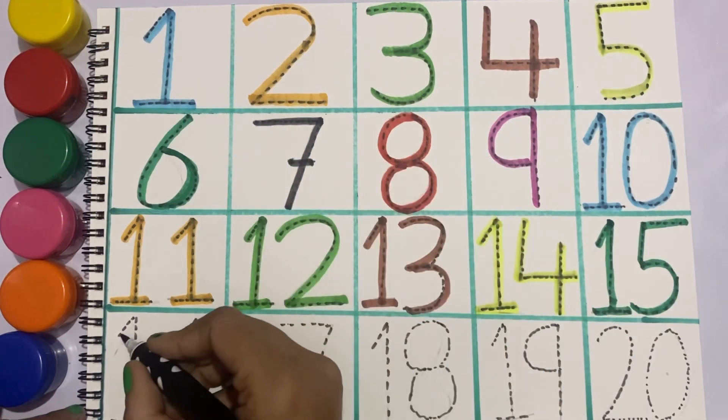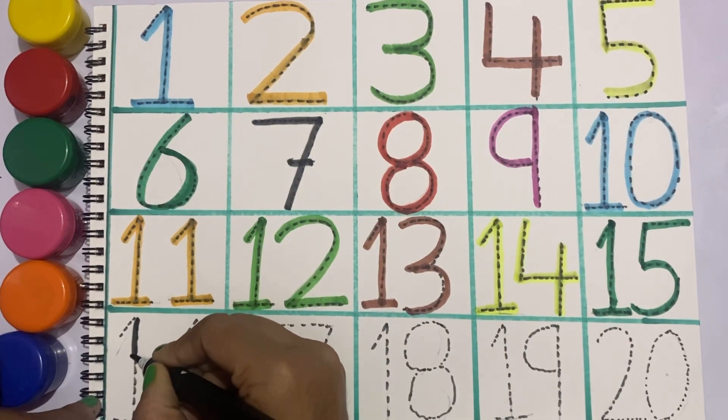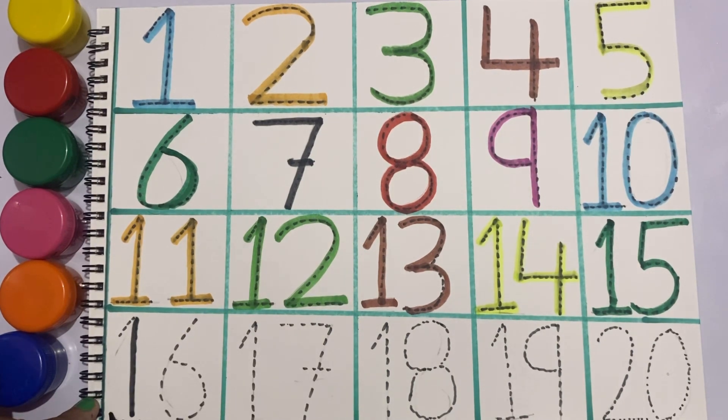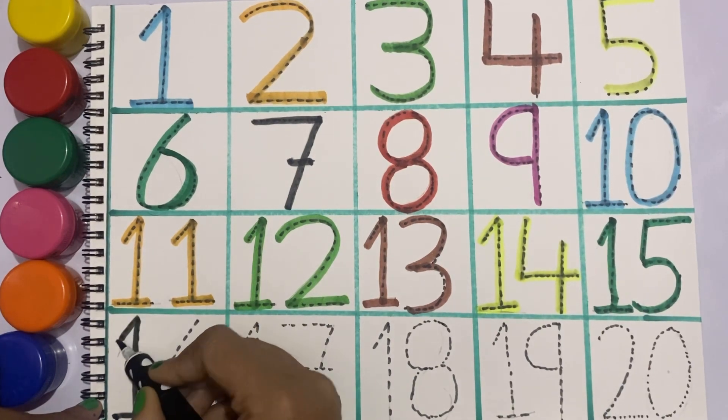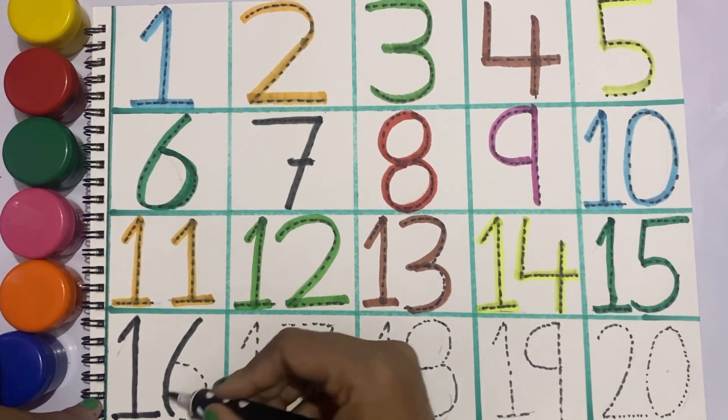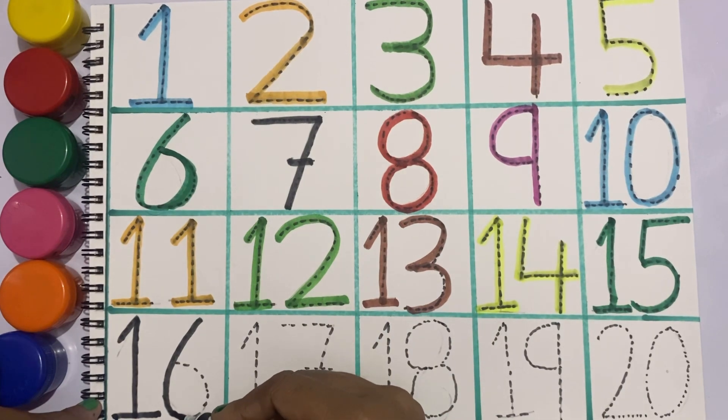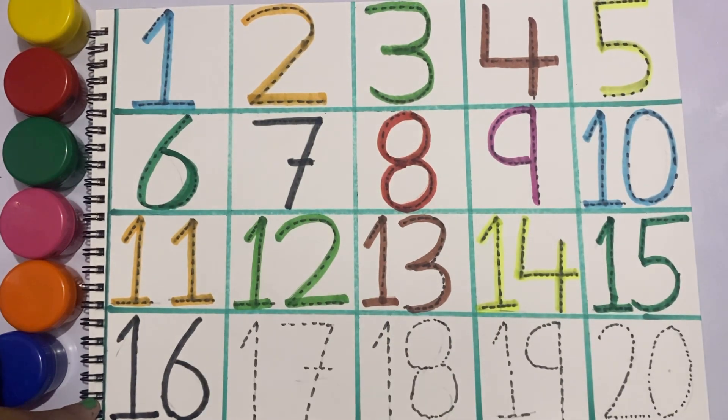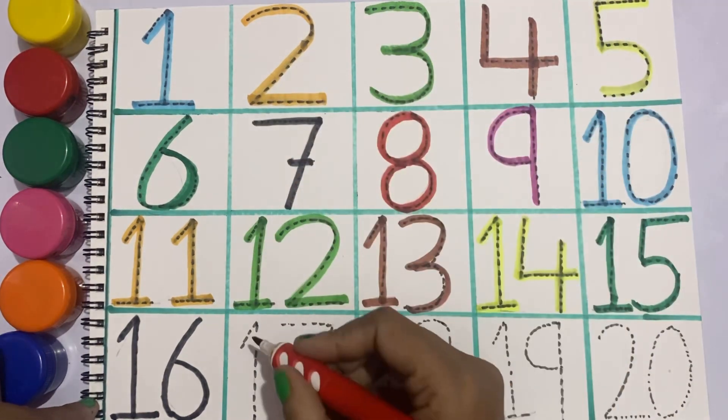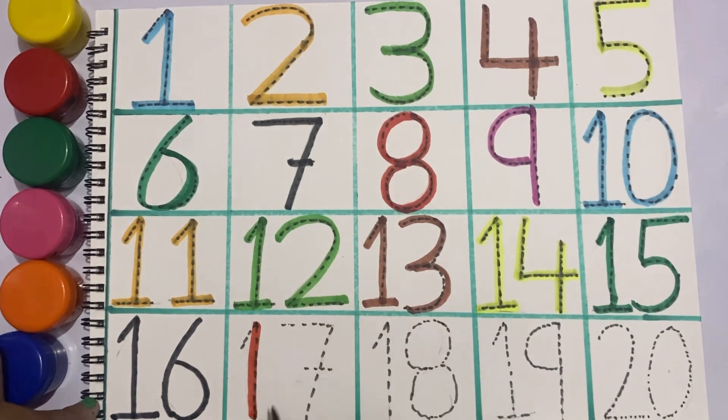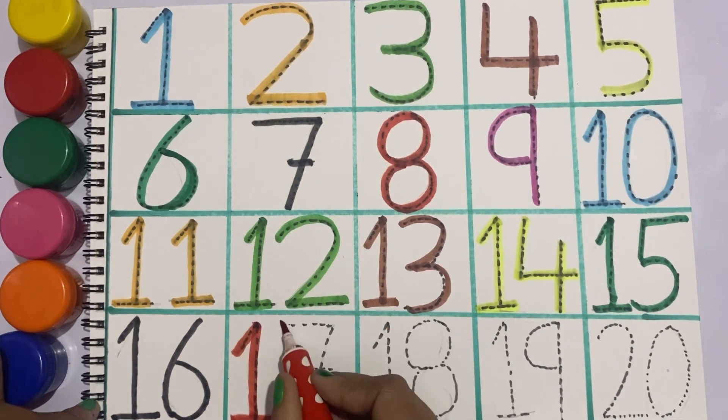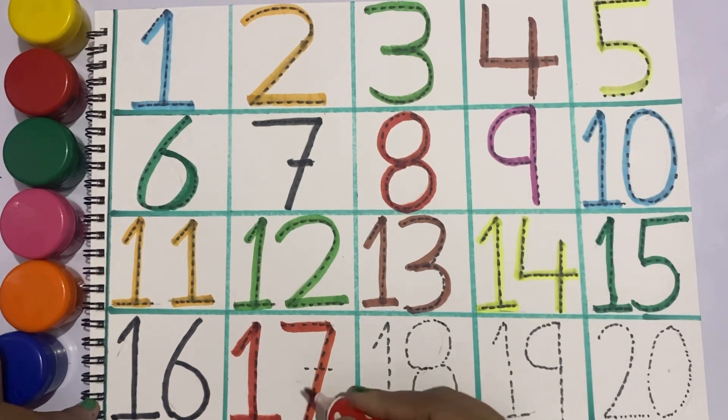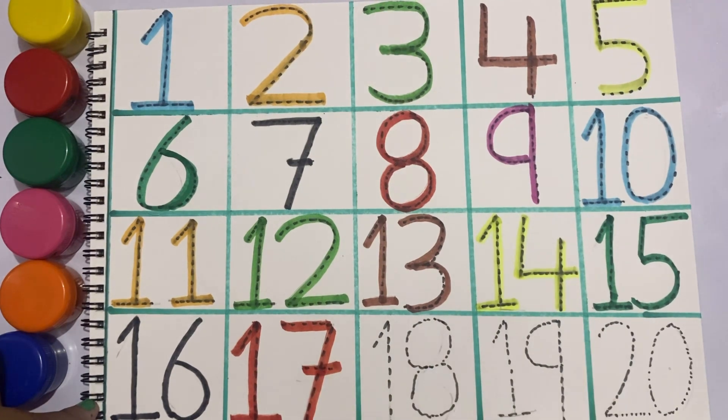Black color, one, six, sixteen. One six, sixteen. Red color, one, seven, seventeen. One seven, seventeen.